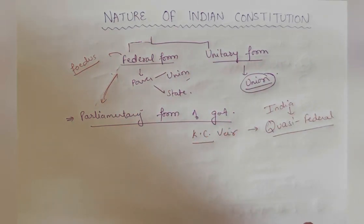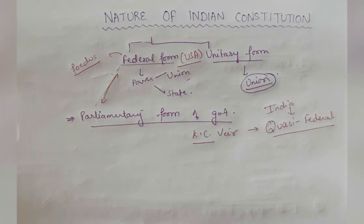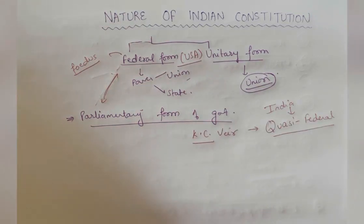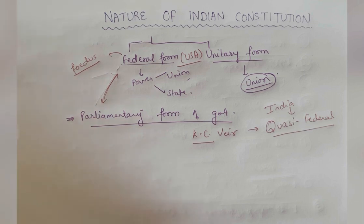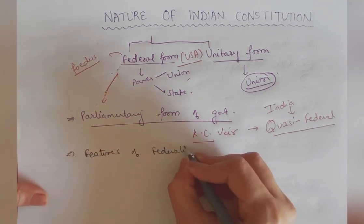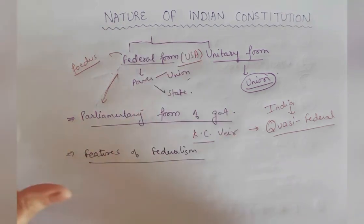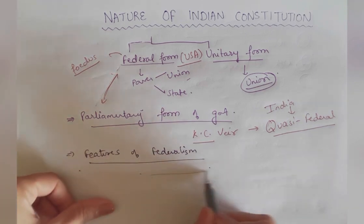India is categorized as a quasi-federal form of government. The best example of perfect federalism is the USA, which adopts the complete federal form of government. We will now find out why India is called quasi-federal — which features prevent India from being a purely federal country. We will discuss the features of federalism alongside the nature of the Indian Constitution.